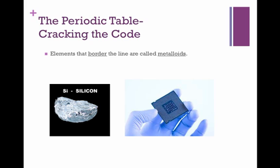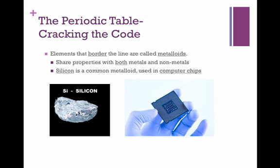Elements that border the line are called metalloids. These elements share properties with both metals and non-metals. Silicon is a common metalloid and it's used in computer chips because it is a good semi-conductor.